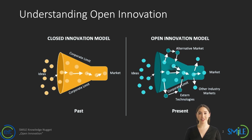Open innovation differs from traditional models in several ways. Collaborative Ecosystem: Open innovation encourages collaboration and partnerships with external stakeholders, including customers, suppliers, universities, startups, and research institutions. It enables organizations to access diverse perspectives, expertise, and resources that may not be available internally.